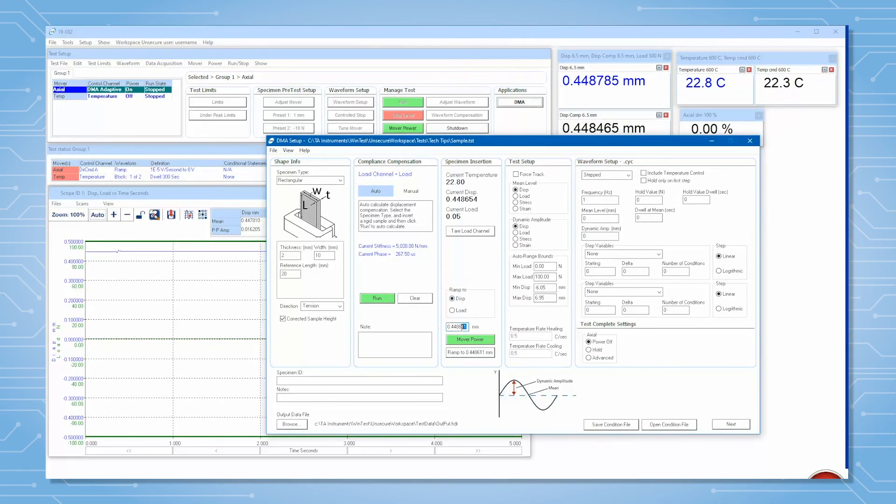If you want to start your test at a certain displacement, you can use RAM 2 button to move the grip to a certain displacement before tightening the top screws. Now you are ready to set up your test conditions and run your DMA test.